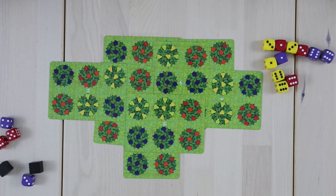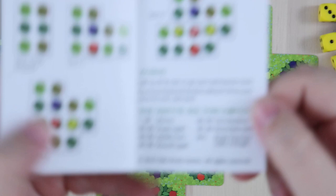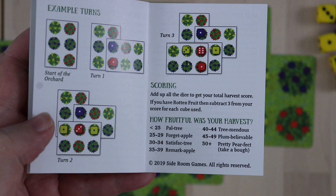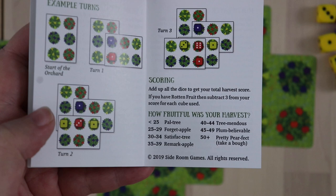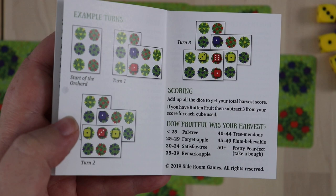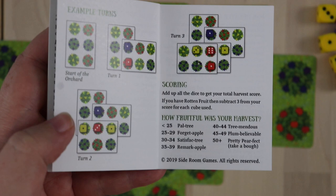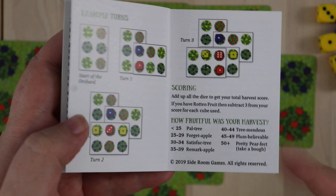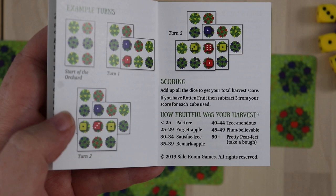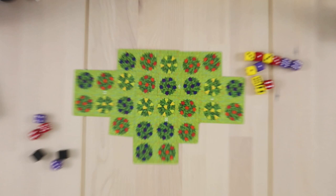So in the rule book, there's this adorable little punny scoring system. So let's have a look. All right, so we got a 42. That was a tremendous score. But all of these little, how fruitful was your harvest scoring ranges are adorable. So if you get less than 25, it's Paltree. The next one is Forget-A-Pole, Satisfac-Tree, Remark-Apple, Tree-Mendous, and Plum-Believable. And then eventually maybe one day I'll get Pretty Perfect Take-A-Bow. I love dad jokes and puns. So this was totally up my alley.